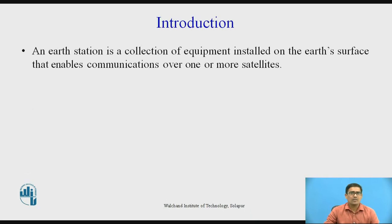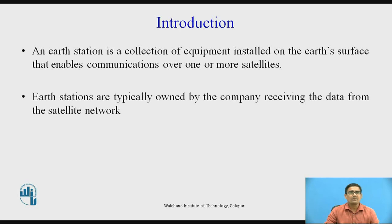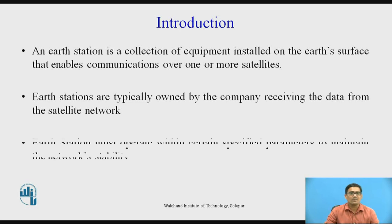So here, we want to see what is the meaning of Earth Station. Earth Station is a collection of equipment that is installed on the Earth's surface that enables communication over one or more satellites. Earth Stations are typically owned by the company that is receiving the data from the satellite network.